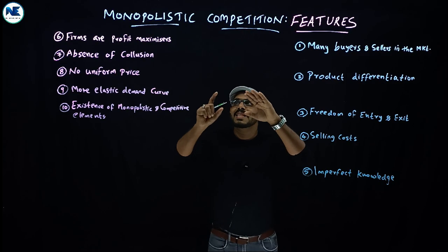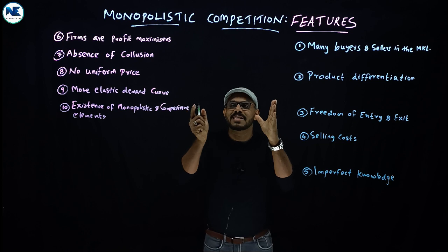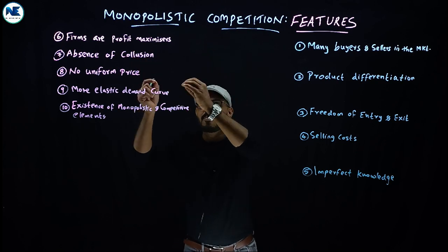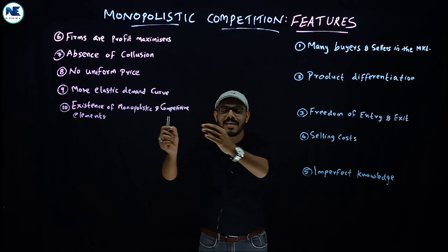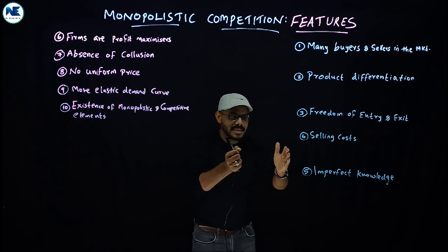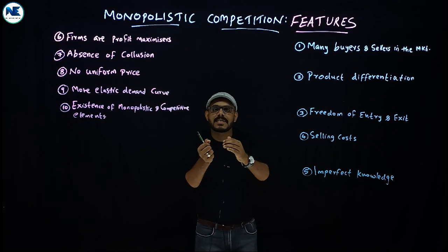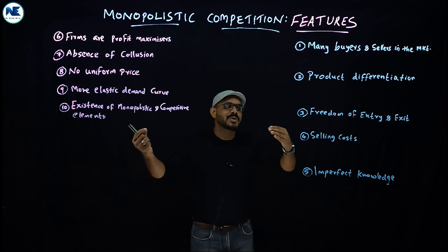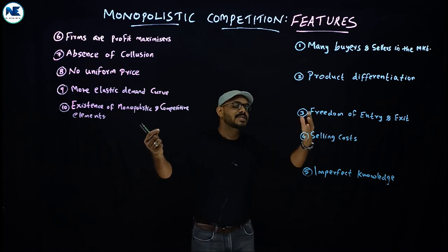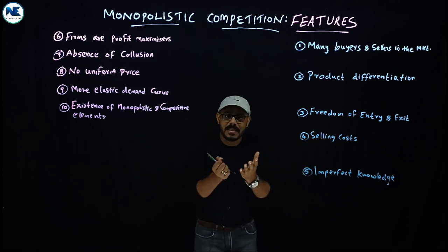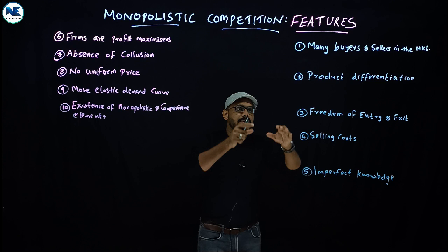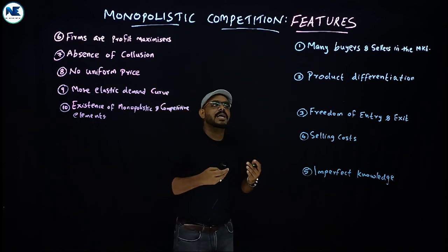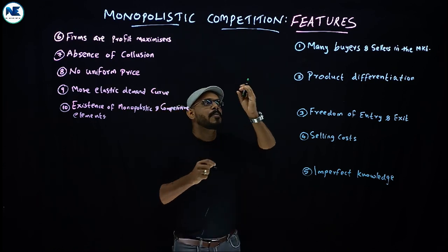We know the meaning of monopolistic competition — it is the combination of monopoly and perfect competition. It combines some features of monopoly and also some features of perfect competition. We have 10 points to list out and discuss one by one.